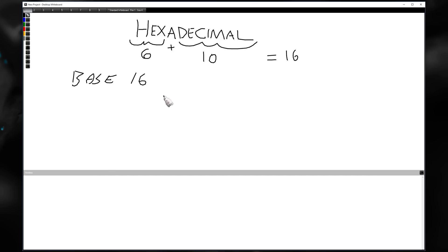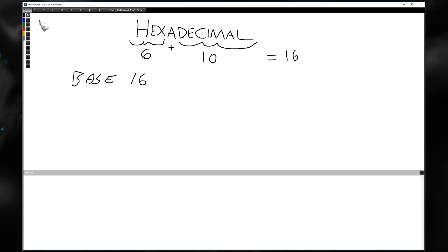Base 16 is a numerical system — a system of numbers. Hexadecimal is a base 16 numerical system, meaning that the base of hexadecimal is comprised of 16 symbols. Let's make it relevant to you using decimal.